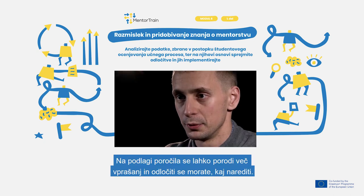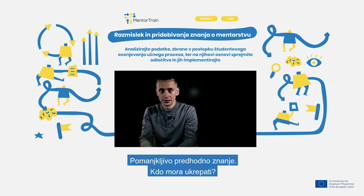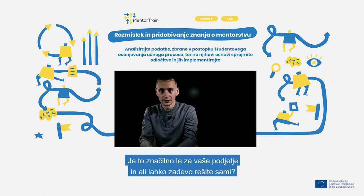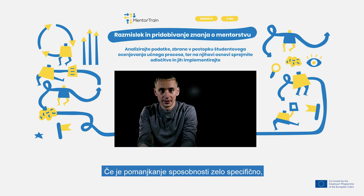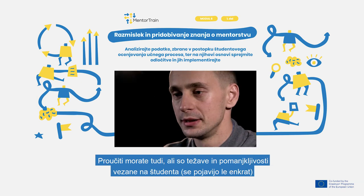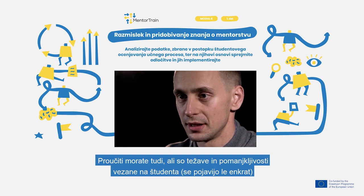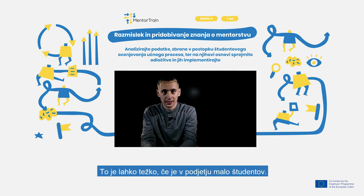Several questions can arise from the report and you need to decide what to do. Regarding shortcomings of previous knowledge — who needs to act? Is it something specific to your company and can you solve it yourself? Can you convince educational institutions to add it to the curricula? If the lack of competencies is very specific, it may be a good idea to provide training alongside onboarding or during the apprenticeship. You also need to consider if the problems and shortcomings experienced are apprentice-specific, occurring only once, or systematic and reoccurring. This can be difficult if a company has a small number of apprentices.